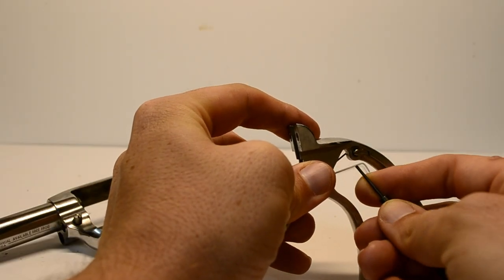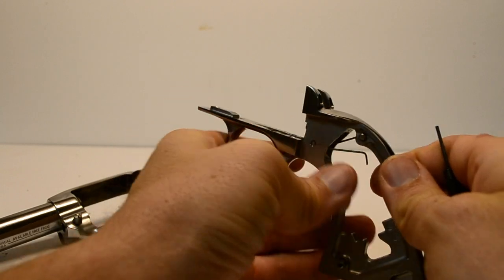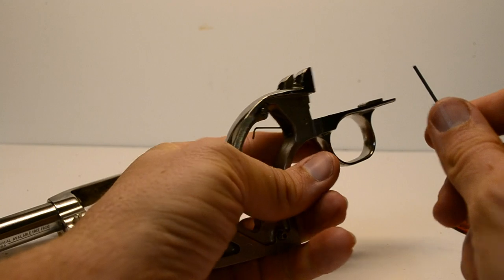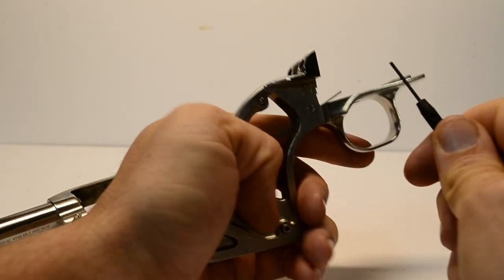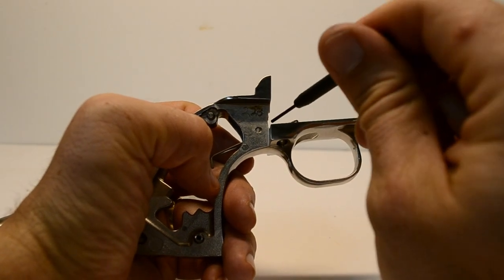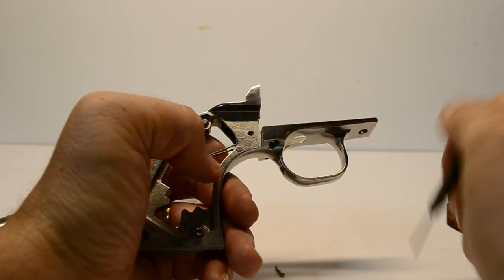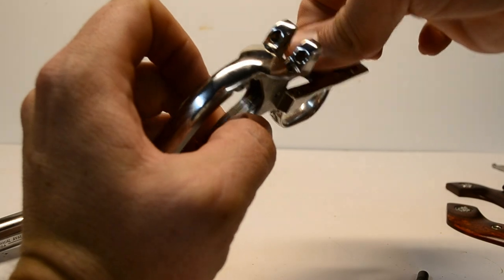Take a punch and unlatch the trigger spring from the trigger spring retaining pin. Use the punch to push out the trigger spring pivot pin and remove the trigger spring from the grip frame.